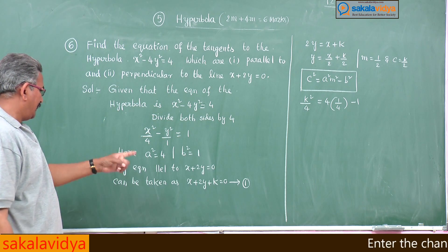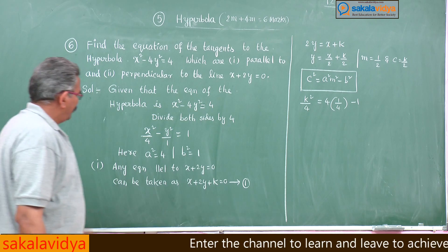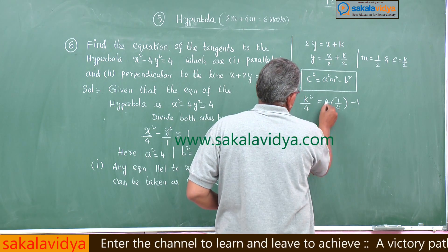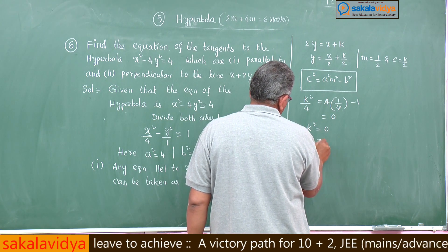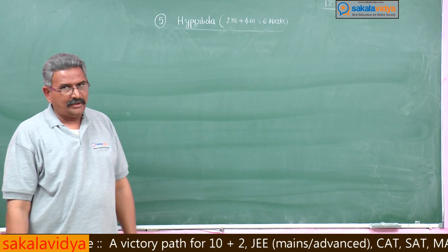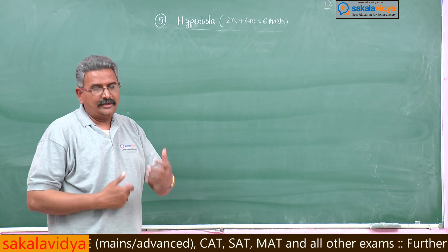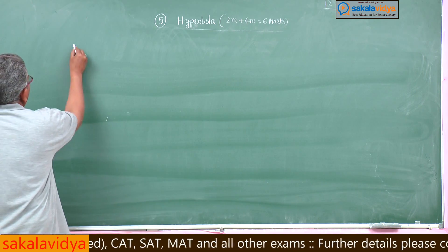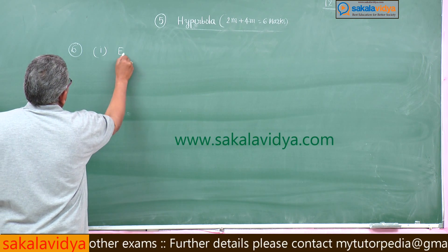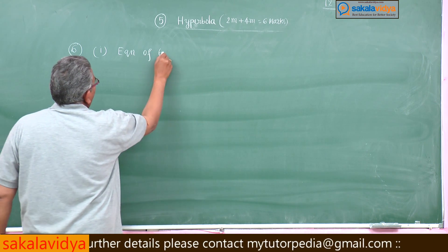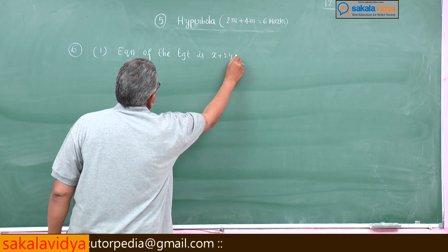Here b² = 1 and a² = 4, so 4 gets cancelled giving 0. Therefore k² = 0, which means k = 0. So the equation of the tangent parallel to x + 2y = 0 is x + 2y = 0.